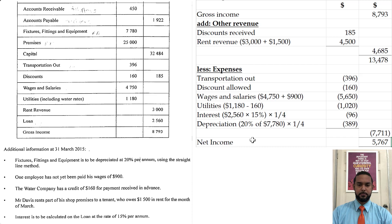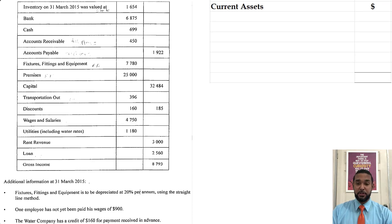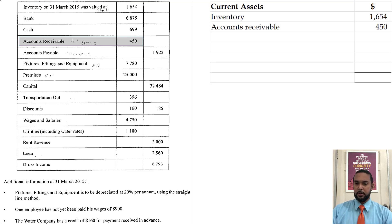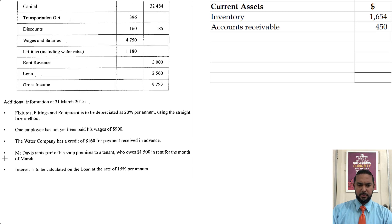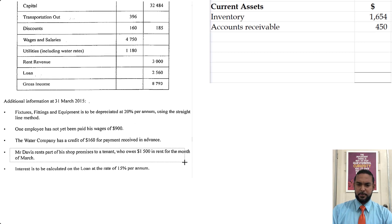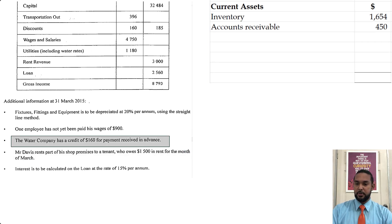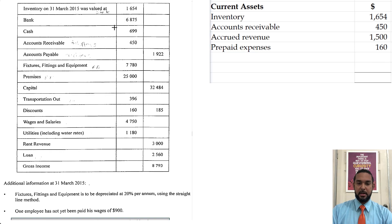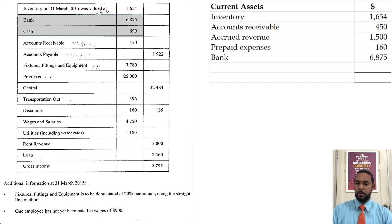Now we have a few balance sheet extracts to do. They want a list of the current assets. We start with closing stock, then accounts receivable. We also have the accrued revenue of 1500 and the prepaid expense of 160 — those go in as current assets as well. And don't forget cash at bank and cash in hand. Those round off our current assets list for a total of 11,388.